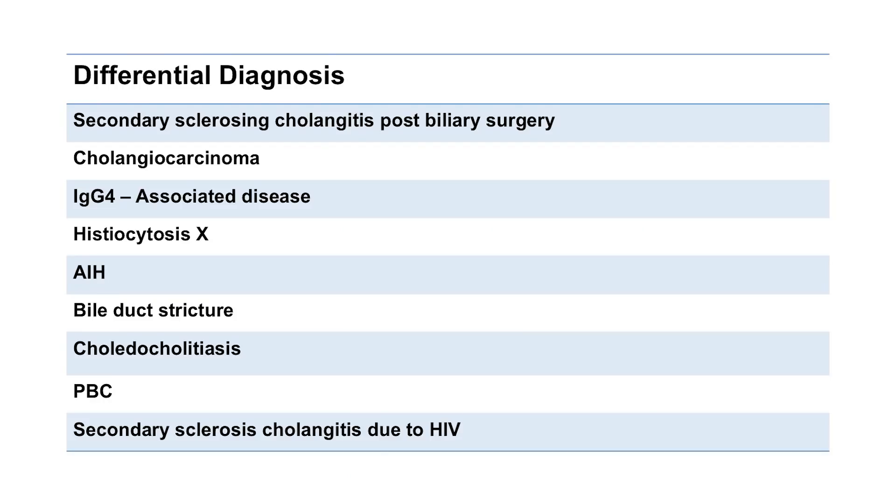Are there important differentials that we have to consider? It is important to consider causes of secondary sclerosing cholangitis. The ones we usually think about would be trauma from previous biliary surgery, common bile duct stones - choledocholithiasis - or ischaemia. It is recognised that you can see a secondary sclerosing cholangitis in HIV as well. And IgG4 disease - it is now standard practice to check IgG4 levels in patients presenting with multifocal biliary stricturing.